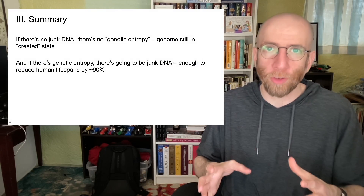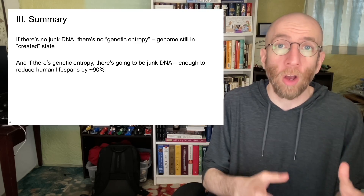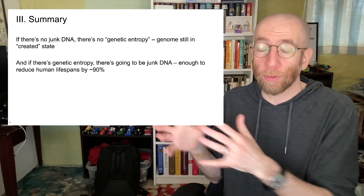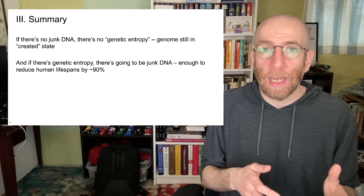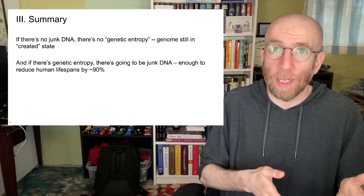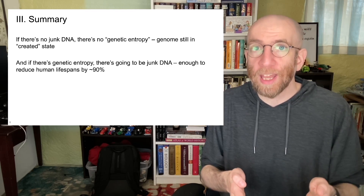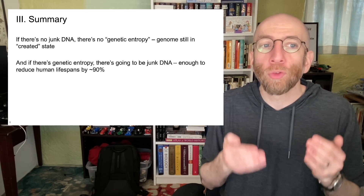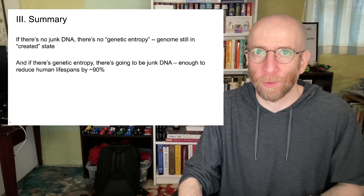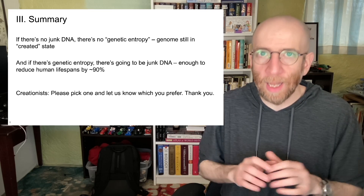In summary, creationists will very frequently argue that genetic entropy is a real thing that supports a young Earth, while also arguing that there is little or no junk DNA in the human genome which supports a creator. But if there's no junk DNA, there's no genetic entropy — the genome is still in its created state. And if there's genetic entropy, there's going to be junk DNA, because enough mutations have occurred to break enough function in the genome to reduce human lifespans by about 90%, according to Dr. John Sanford. So, creationists, please pick one of these arguments and let us know which you prefer.